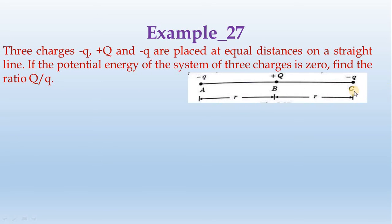The distance between AB and BC is equal to R. That is, the distance between minus q and plus Q is R, and the distance between minus q and minus q is 2R.